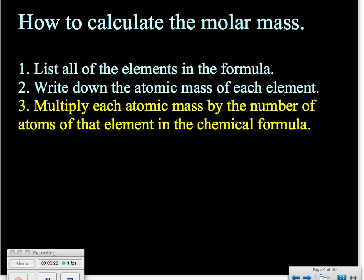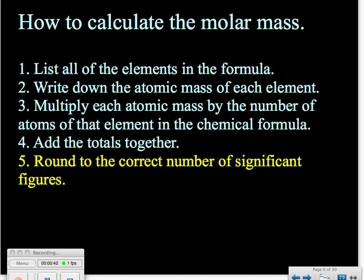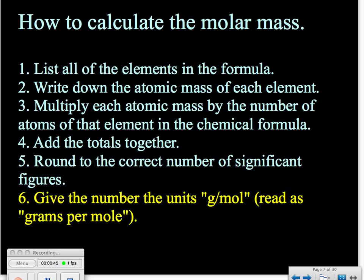The third step is to take each of those atomic masses and multiply by the number of atoms of that element in the chemical formula. The fourth step is to add those totals together, then make sure you round to the correct number of significant figures. The units that go with the number are grams per mole.